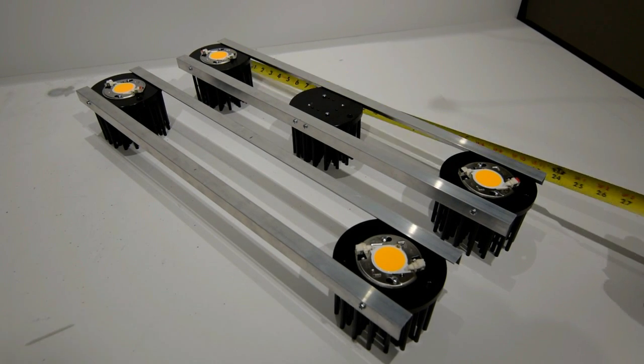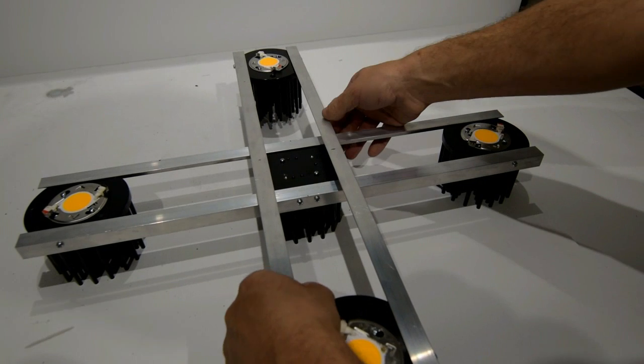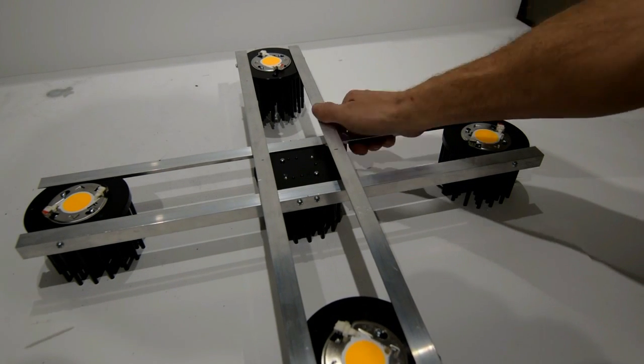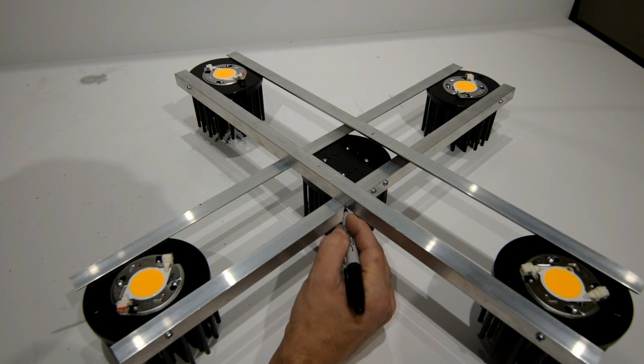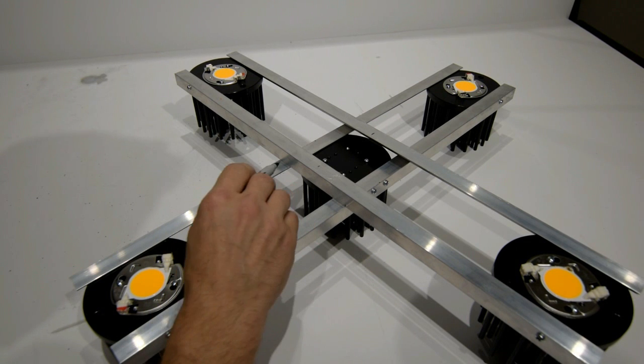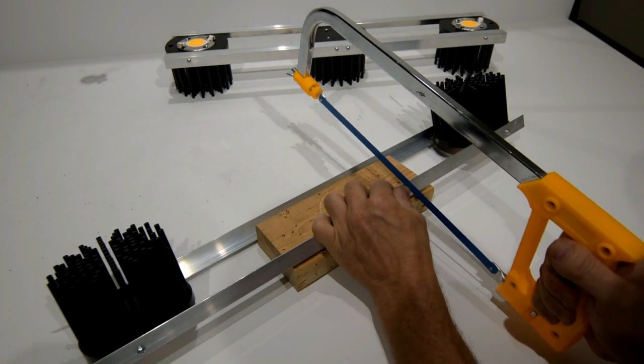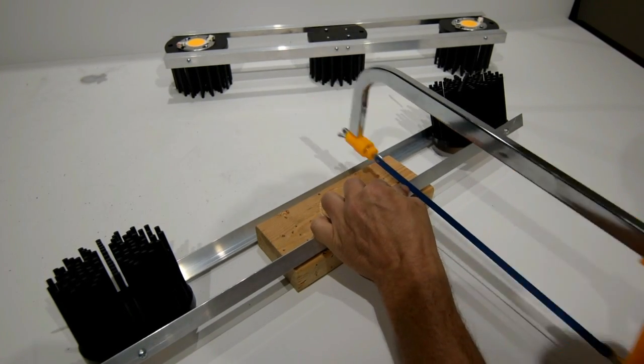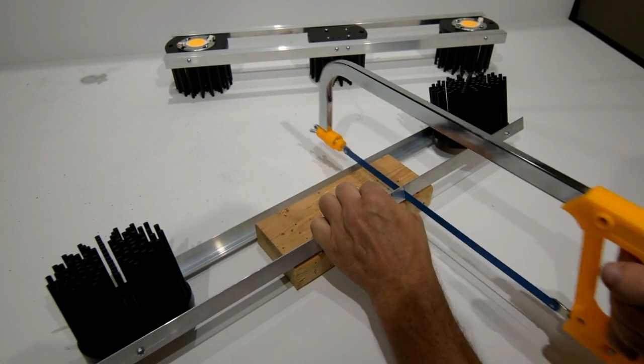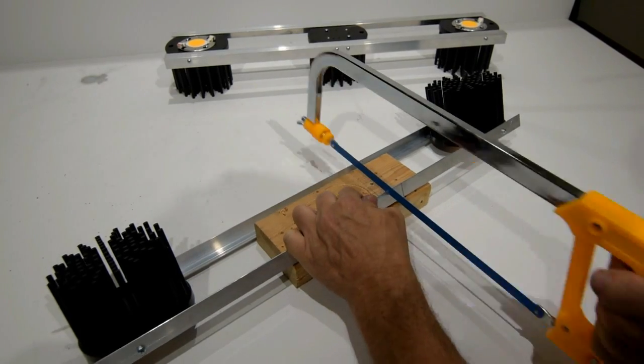After you've got three heat sinks mounted to one bar and two heat sinks mounted to the other, just simply cross the bars and mark where they overlap. Mark it on all four sides. What you're going to want to do is take a Dremel tool or a hacksaw and notch out these little corners. You don't cut all the way through the angle, you just cut about halfway down, notch it out.